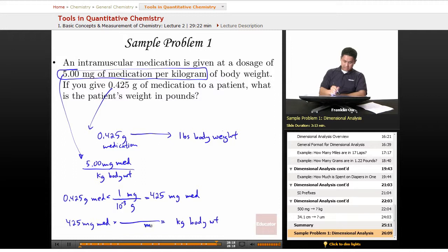And so mg is going to go on the bottom, kg is going to go on the top. And we know that from the first sentence, it's 1 kg for every 5.00 mg.